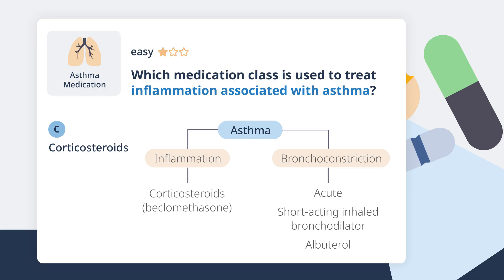So go ahead and write that in: S-A-B-A. Those are short-acting inhaled bronchodilators. It's the route of choice in an acute attack.